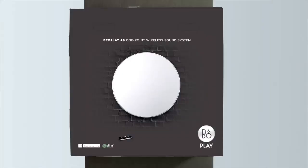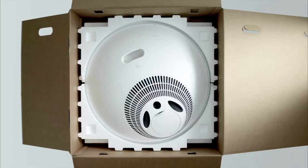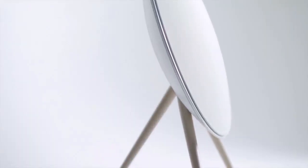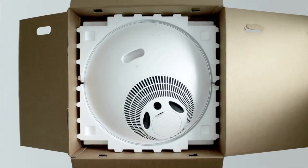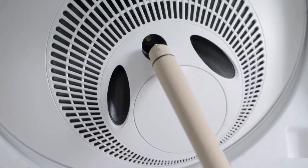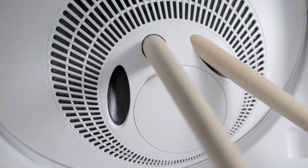Start by opening the box and taking out the three supplied legs. If your Beoplay A9 is going to stand on the floor, you'll need to mount these on the back. Leave the speaker in the box while you do this. The leg marked with an A goes in the middle and the two legs marked B go on either side.